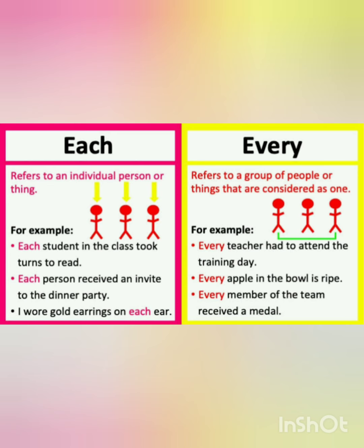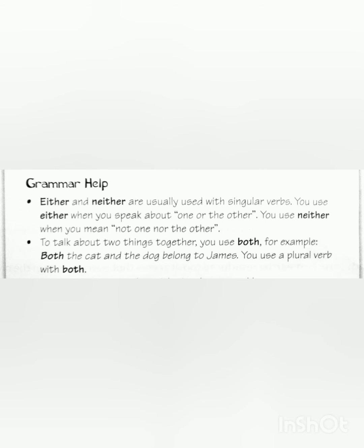'Each' and 'every' are quantifiers with which we use singular verbs like is, has, was. Similarly, 'either' and 'neither' also take singular verbs. Quantifiers like 'both' and 'all' take plural verbs. For example: both the cat and the dog belong to James — using 'belong', not 'belongs'.